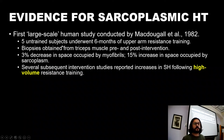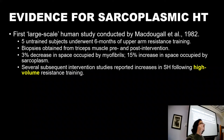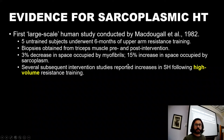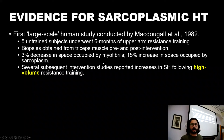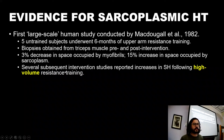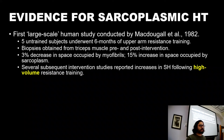The first human studies came in 1982 by MacDougall and colleagues. They took five untrained subjects through six months of upper arm resistance training and obtained muscle biopsies — one of the truest ways to understand what's happening in the muscle, involving extraction of a chunk of muscle tissue. Biopsies were obtained from the triceps before and after the intervention. They showed a 3% decrease in the space occupied by the myofibrils but a 15% increase in space occupied by the sarcoplasm. Many other intervention studies using high-volume resistance training reported very similar findings, providing experimental evidence that sarcoplasmic hypertrophy was occurring in humans.